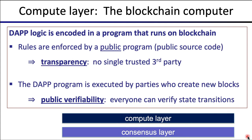The program basically moves from one state to another to another, and all those state transitions are written to the blockchain so everyone can verify they're valid. Programs are manipulating states, and all those state manipulations are written to the blockchain. The dApp logic — the program logic — is encoded in a program that runs on the blockchain. What that means is that the rules are enforced by the public program, so anyone can inspect the program that's running on the chain.